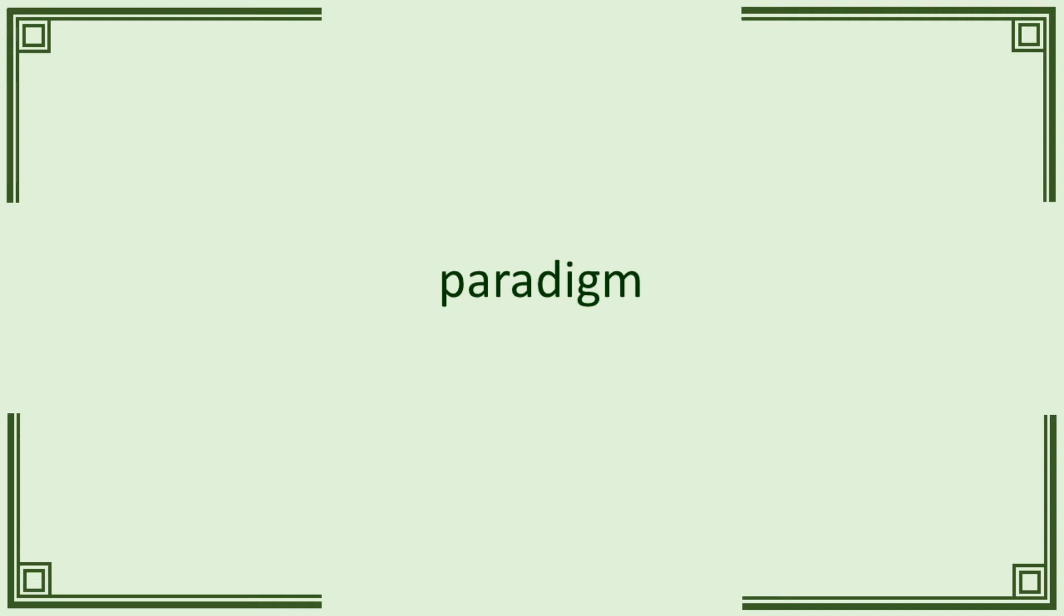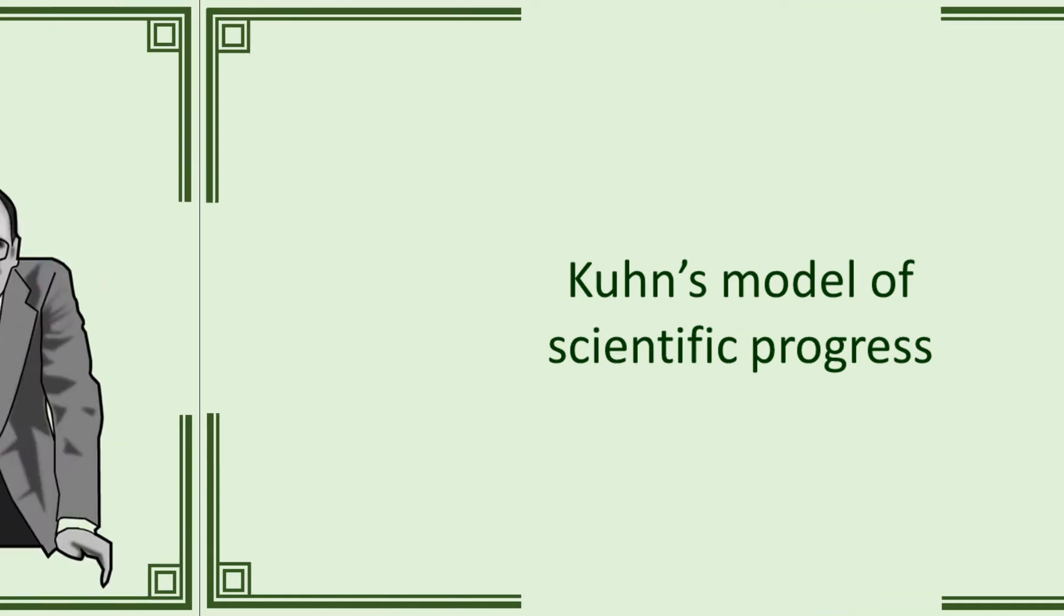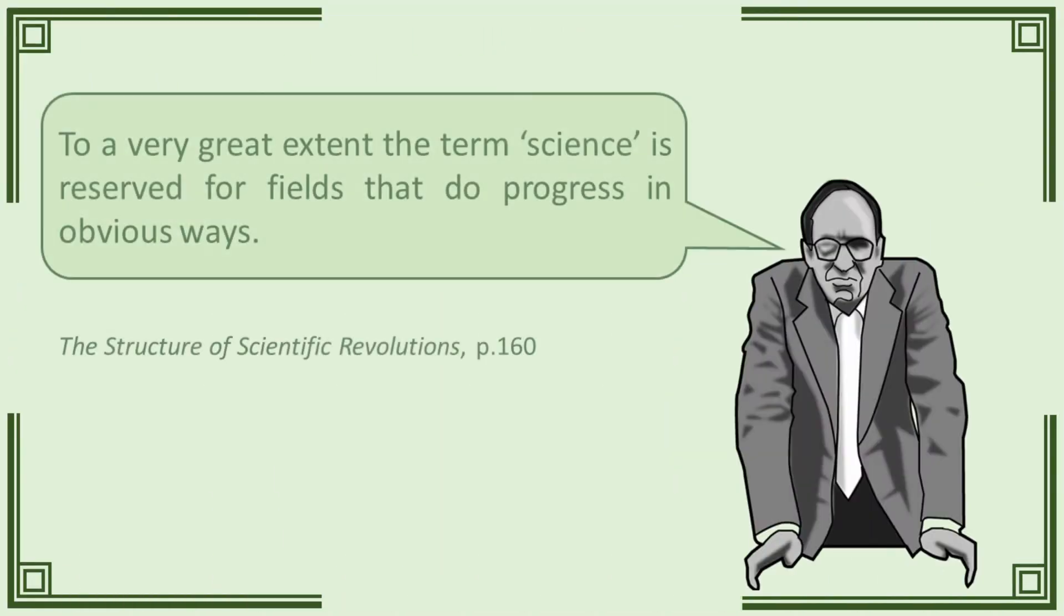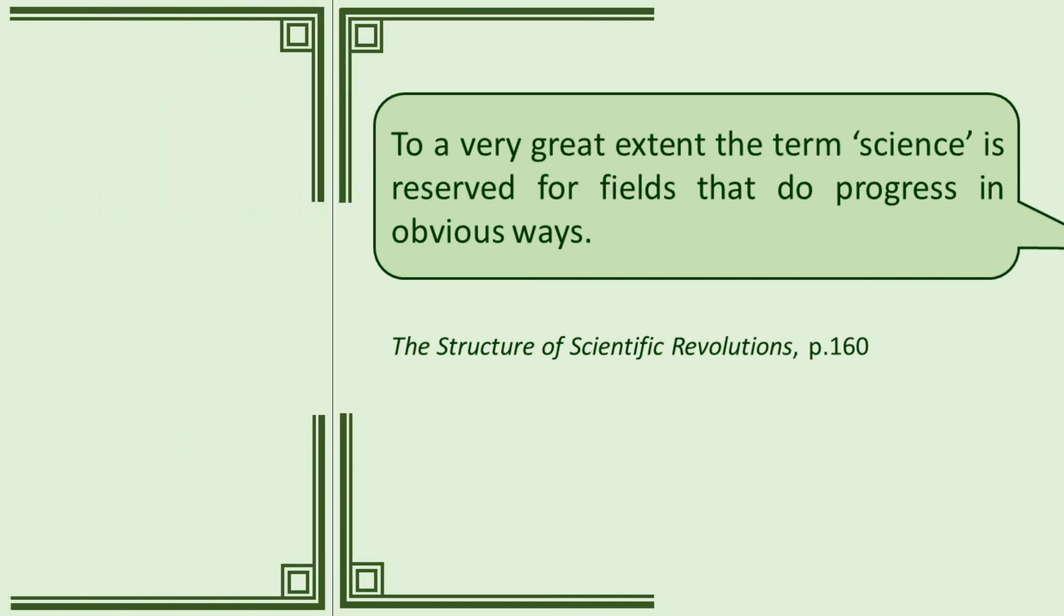I want to begin by explaining the model into which that term fits. The book is concerned with explaining empirical observations, the first of which is the remarkable progress made by the academic disciplines we collectively call sciences. Or, as Kuhn phrases it, to a very great extent the term science is reserved for fields that do progress in obvious ways. How does that happen?